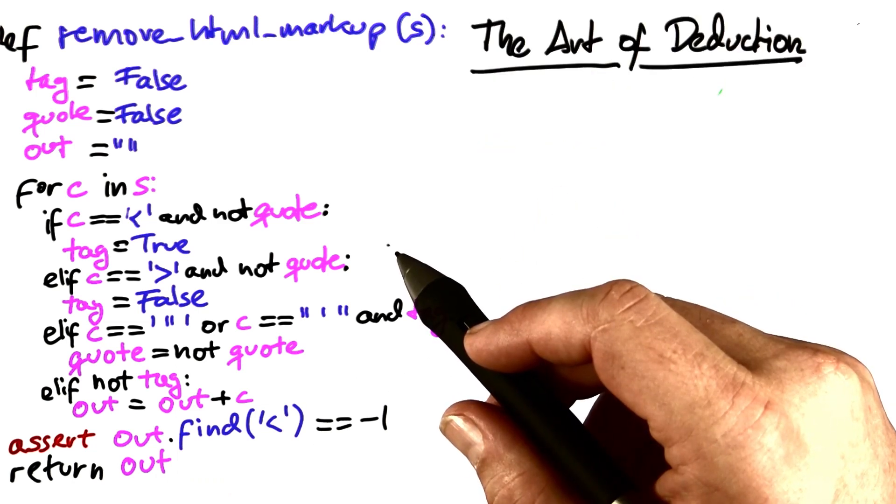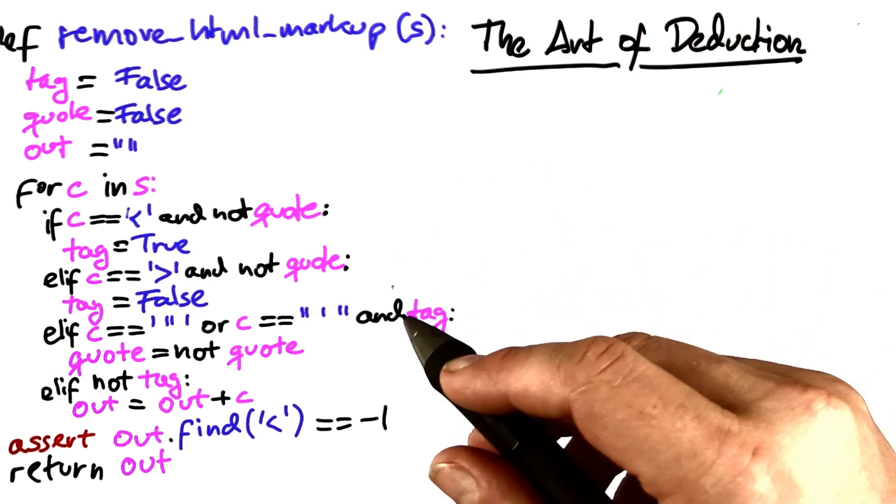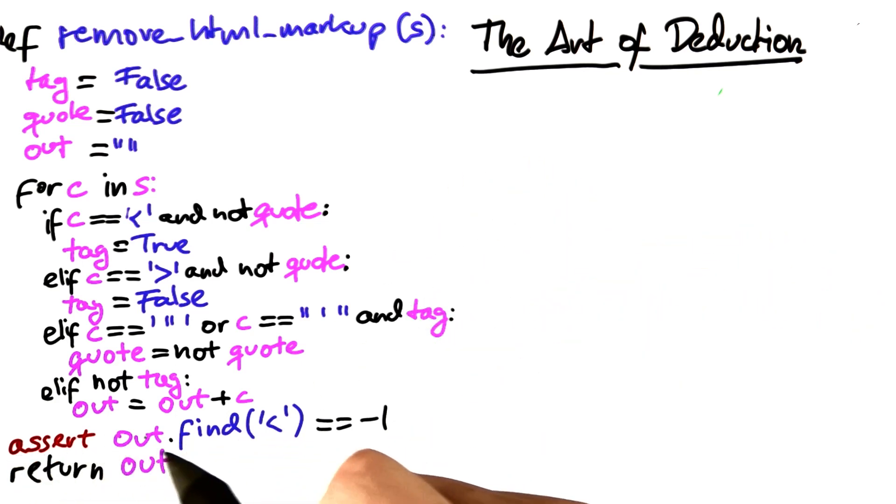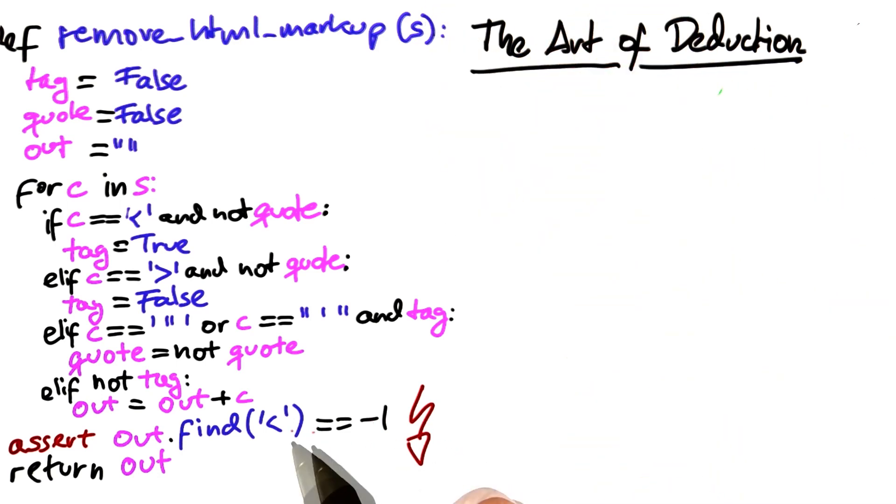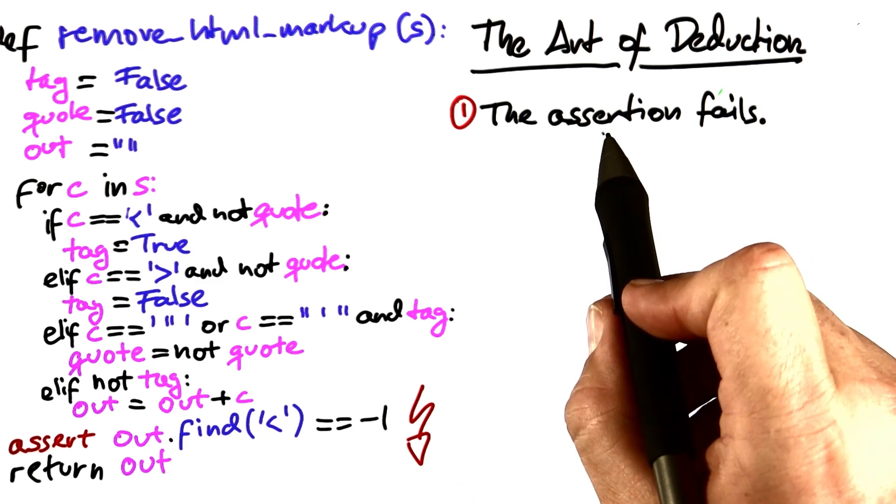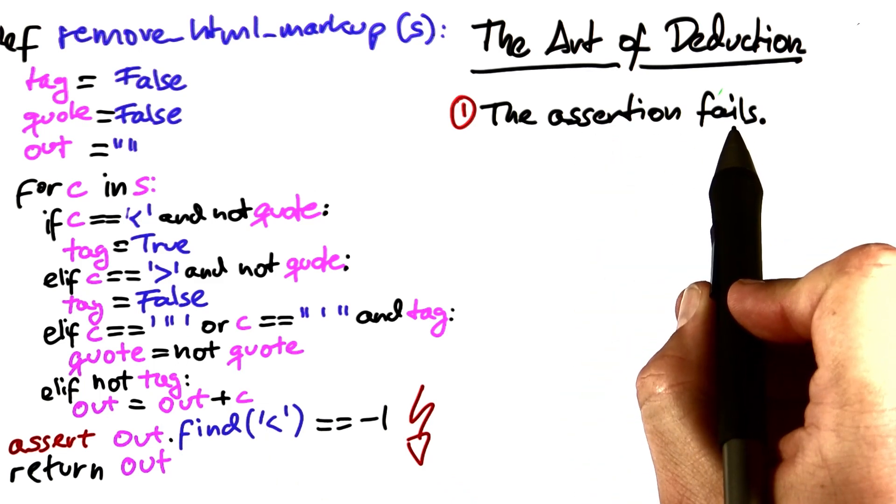Now let's practice the art of deduction on this example, simply from the observation that this final assertion has failed. So all we know is that indeed this code can produce an output in which HTML markup is still present. This is the observation from which we start.